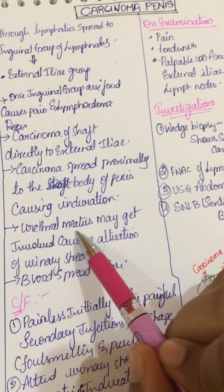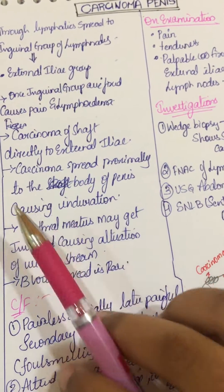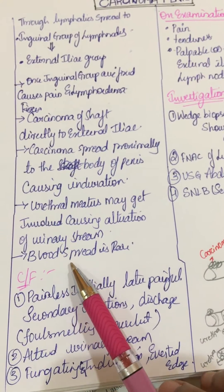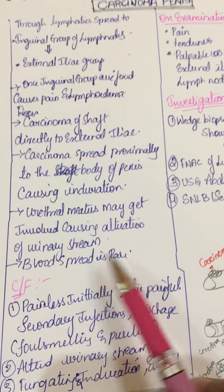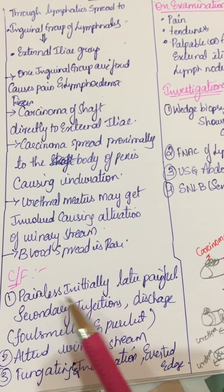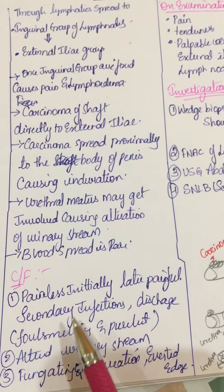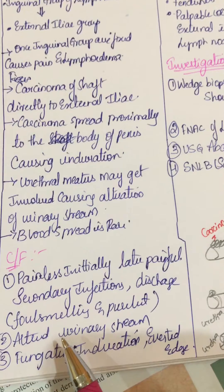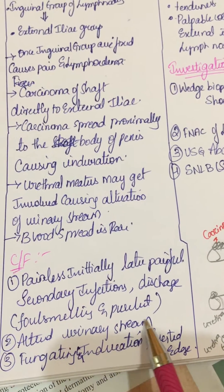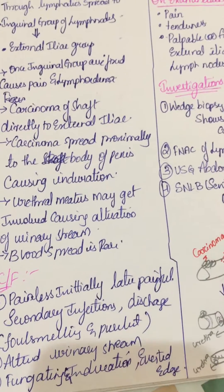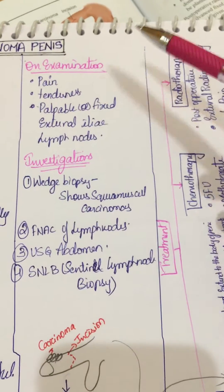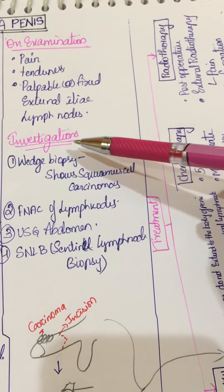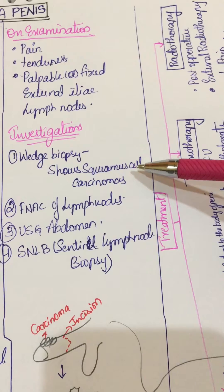Carcinoma spread proximally to the body of the pelvis causing induration. The urethral meatus may get involved causing alteration of the urinary stream. Blood spread is rare. Clinical features: painless initially, later painful, secondary infections, foul-smelling and purulent discharge, altered urinary stream, fungating and indurating lesion with everted edges.